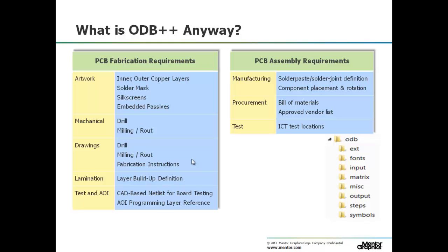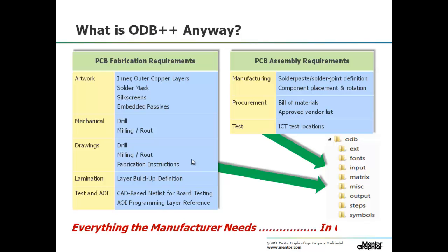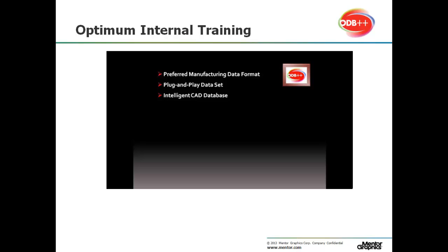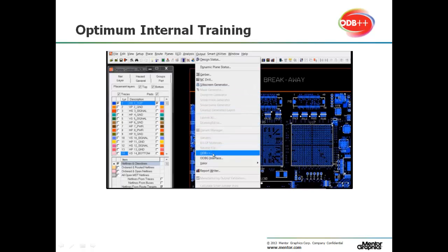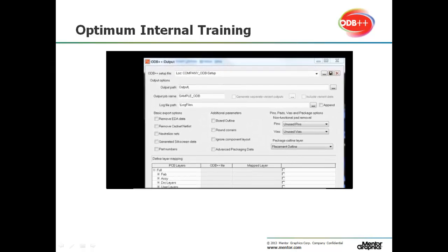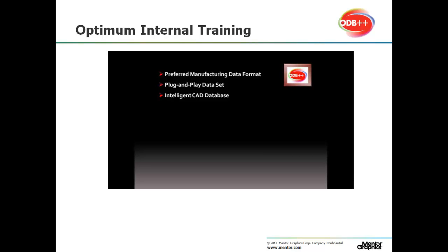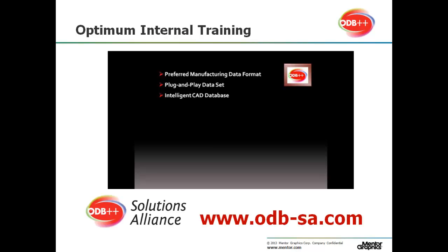Now that we had confidence in the data, it was important to have my designers develop a better understanding of ODB++. So what is this ODB++ file anyway? It's essentially another CAD database made up of quite a few files organized into standard directories and compressed into one TGZ file — it's everything the manufacturer needs in just one file. To educate my team on how to properly output and review the ODB++ file, I tasked one of my design managers to put together a series of step-by-step instructional videos. He did an outstanding job and has been a huge part of the success in training our designers. These videos are also available on the ODB++ Solutions Alliance website.